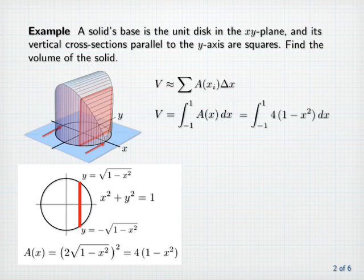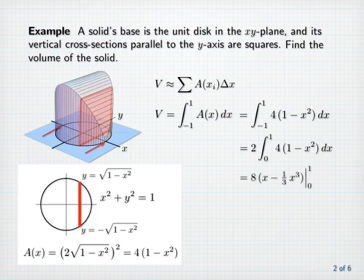We'll use symmetry here to rewrite the integral from minus one to one as two times the integral from zero to one. Anti-differentiating, we have eight times x minus one-third x cubed evaluated from zero to one, which equals eight times one minus one-third minus zero, or eight times two-thirds, which is sixteen-thirds. This is the exact volume of the solid.